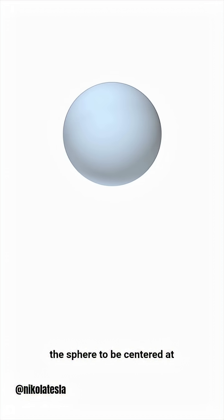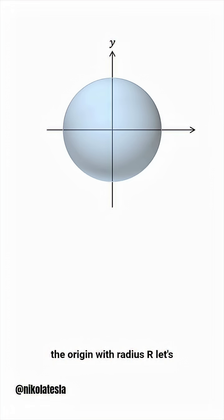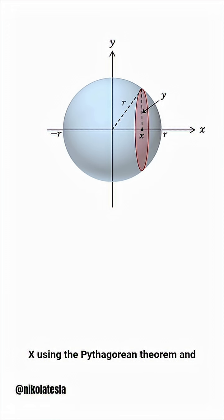Let's take the sphere to be centered at the origin, with radius r. Let's slice the sphere with a plane perpendicular to the x-axis at a certain point. The result is a circular cross-section whose radius depends on this position x. We can express this radius y in terms of x using the Pythagorean theorem.